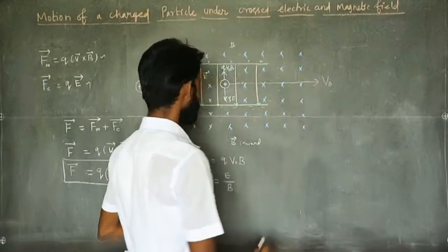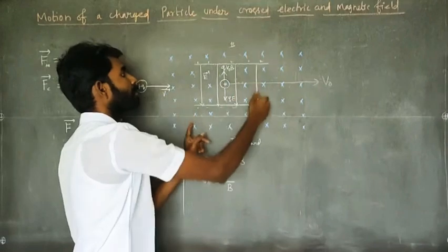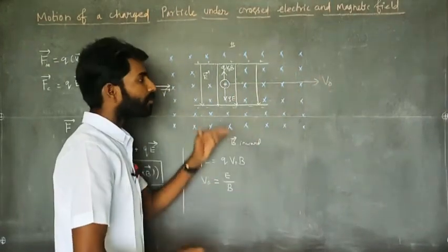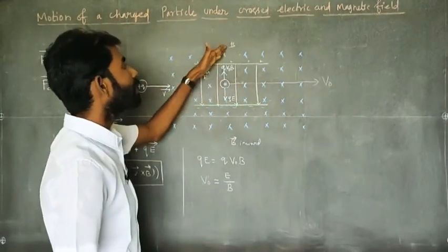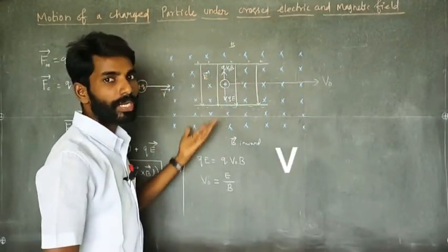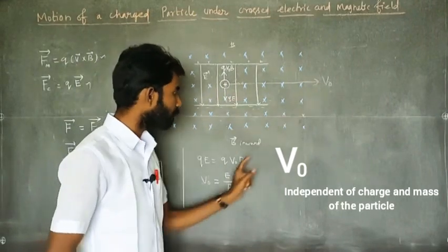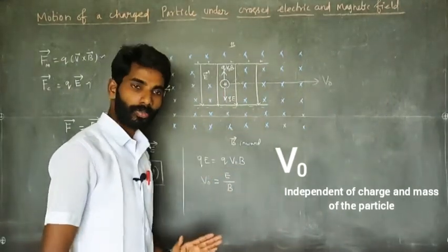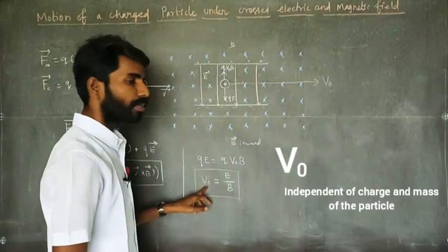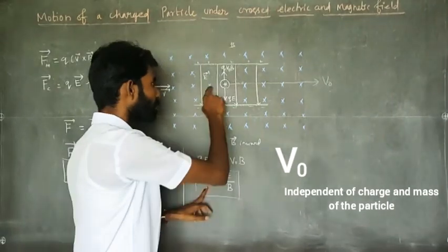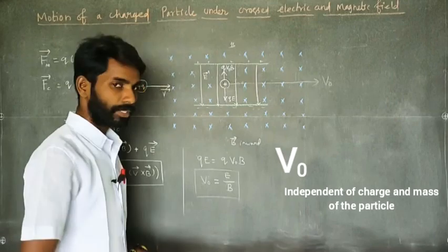So v₀ = E/B. This means the velocity selected by this arrangement — particles deviating up or down are not selected; only particles with this exact velocity pass through. This velocity is the selected velocity. This arrangement is called a velocity selector — it selects the velocity v₀ = E/B. Thank you.